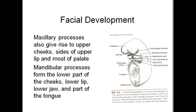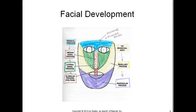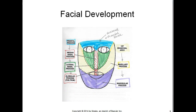The mandibular processes form the lower part of the cheeks, the lower lip, the lower jaw, and part of the tongue. The frontal process gives rise to the forehead and the frontal bone, the median nasal process, and the first branchial arch gives rise to the maxillary process and the mandibular process. The globular process is also derived from the frontal process.